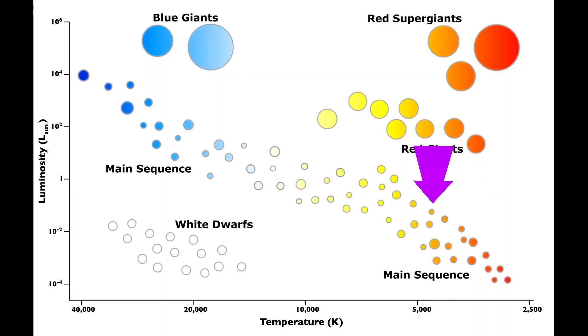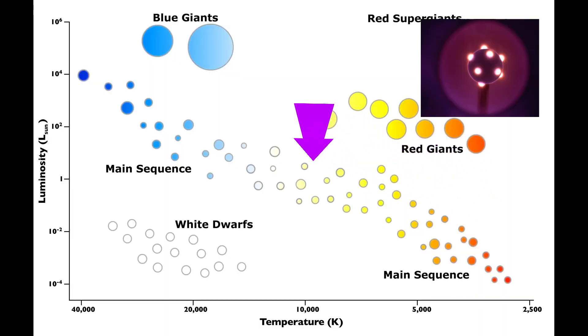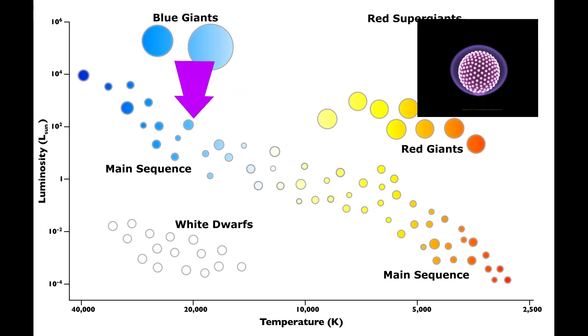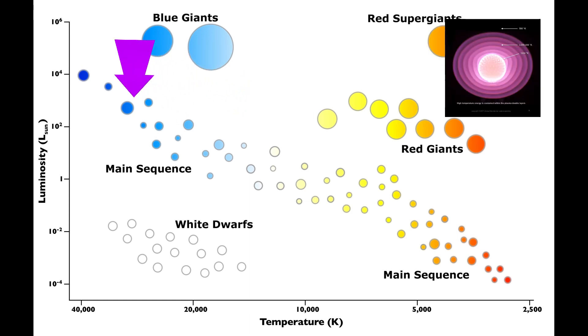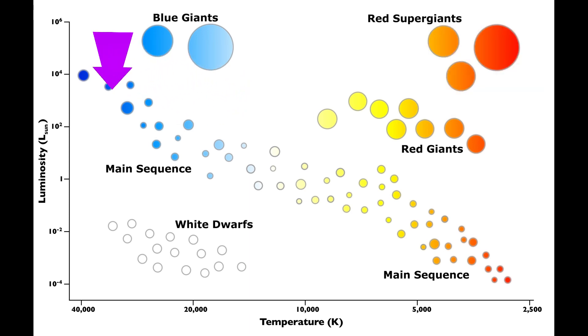As we move up the Hertzsprung-Russell diagram, the current density increases and this would give rise to a greater number of tufts on the surface. This in turn would mean an increase in the luminosity and the temperature on the surface.